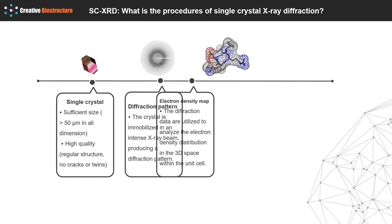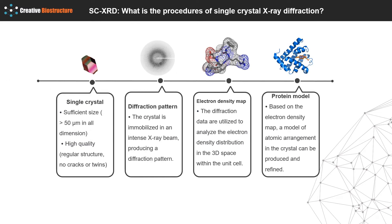The process of single crystal X-ray diffraction technique can be roughly divided into four steps. The first step is to obtain high-quality single crystals of the target protein, which is called protein crystallization. When the solution of the solubilized protein reaches supersaturation, it promotes protein aggregation and nucleation. Ultimately, individual protein molecules arrange themselves in a repeating series of unit cells by adopting a uniform orientation. Qualified crystals need to be of sufficient size, normally larger than 50 micrometers in all dimensions and high quality, such as regular structure with no cracks or twins.